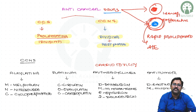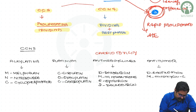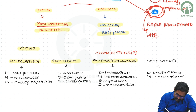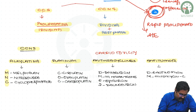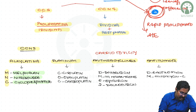Under cell cycle nonspecific drugs, we have alkylating agents, platinum compounds, anthracyclines, and anti-tumor drugs. For alkylating agents, remember the mnemonic NMC: N for nitrosourea, M for melphalan, and C for cyclophosphamide. Platinum compounds can be remembered as COC: cisplatin, oxaliplatin, and carboplatin.